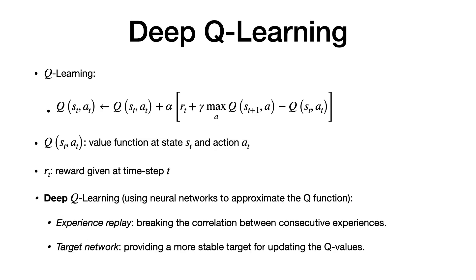The first topic is deep Q-learning. In Q-learning, we have a Q-function — the value function of state S and action A — which identifies the action that will give the highest value. Traditionally, a two-dimensional array is used to learn Q-values, but with large observation or action spaces this is not feasible. Later, people developed deep Q-learning using neural networks to approximate the Q-function.